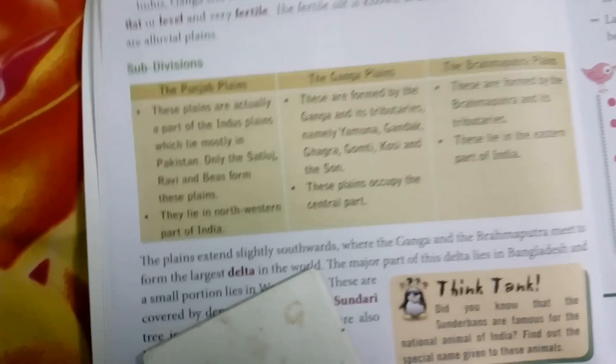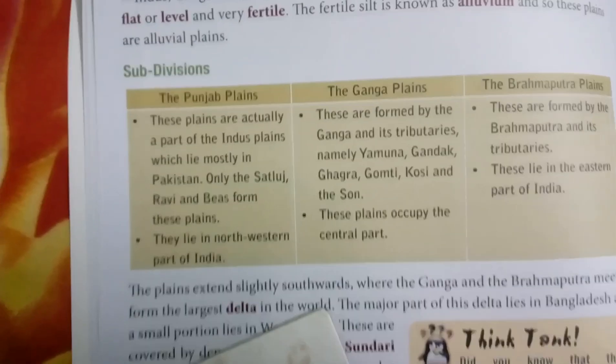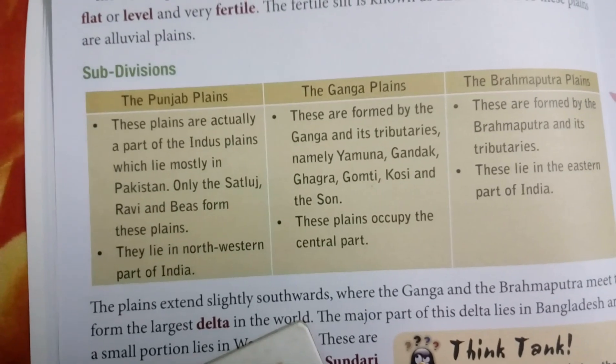Subdivisions. The Northern Plains are divided into three parts: the Punjab Plains, the Ganga Plains, and the Brahmaputra Plains.